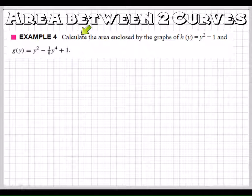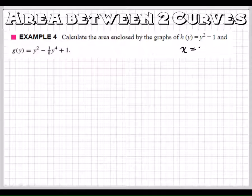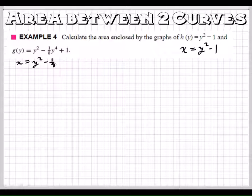Alright, this problem says calculate the area enclosed by the graphs of that and that. Now this is weird because it has y's in it. Sometimes you might see these written like this: x equals y squared minus 1, and this one, x equals y squared minus 1 eighth y to the fourth plus 1.